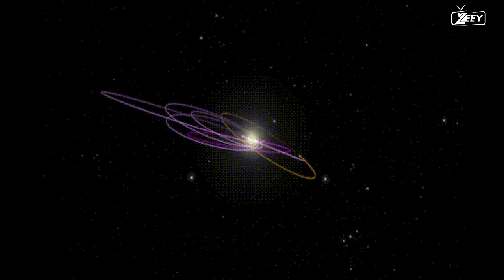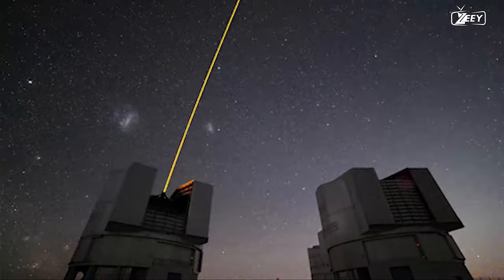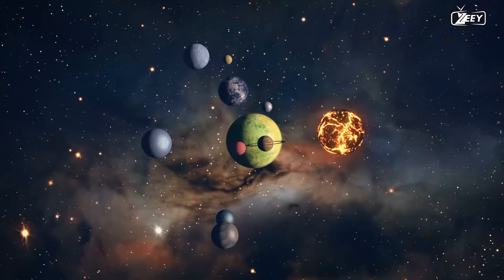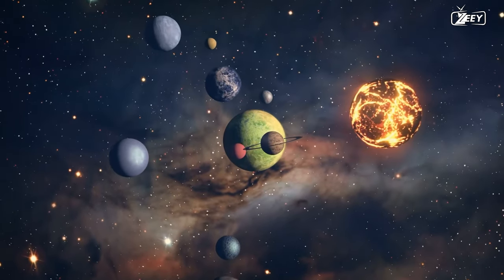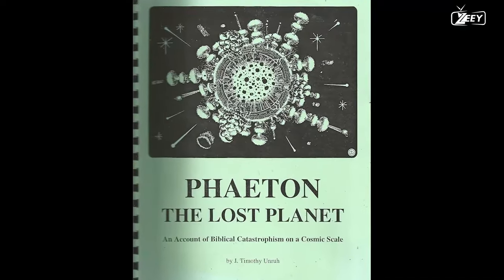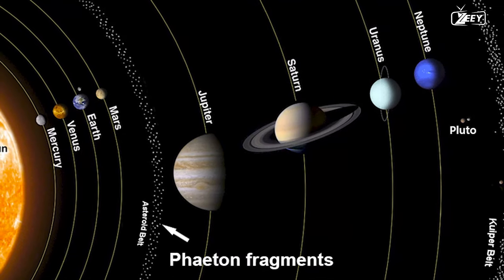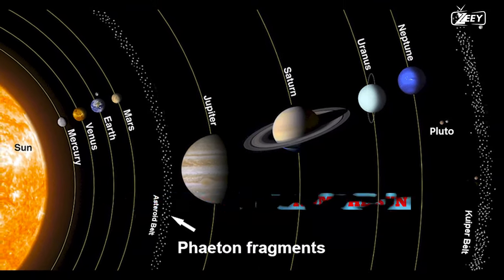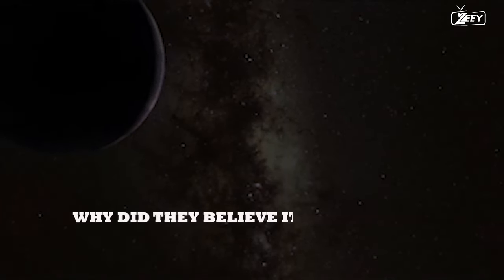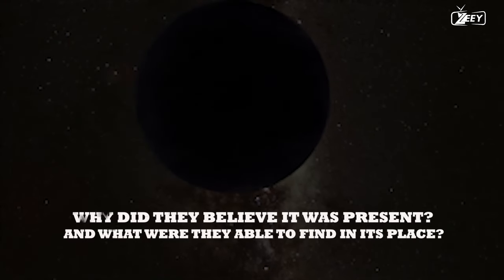Even in recent years, there has been a worldwide search for the enigmatic Planet 9 beyond Neptune. However, as of August 2023, nothing has been found. It would appear that we are perpetually searching for new planets lingering in the shadows of the solar system. And one of the most intriguing examples of this is the hypothetical planet Phaeton, which was thought to exist between Mars and Jupiter, the true fifth planet from the Sun. So why did scientists search for this enigmatic planet? Why did they believe it was present? And what were they able to find in its place? Let us find out together.